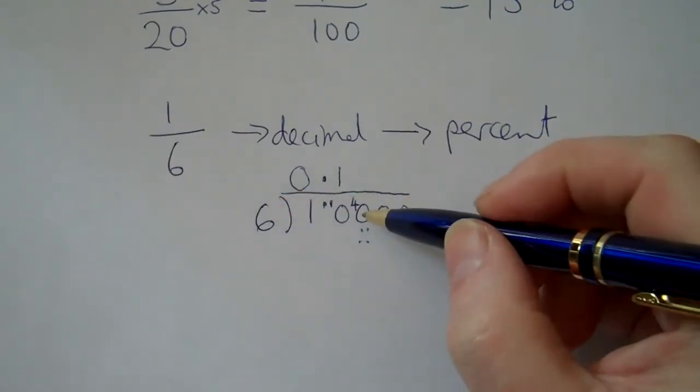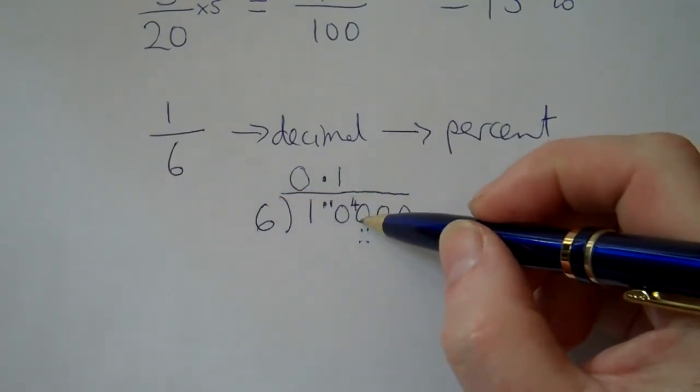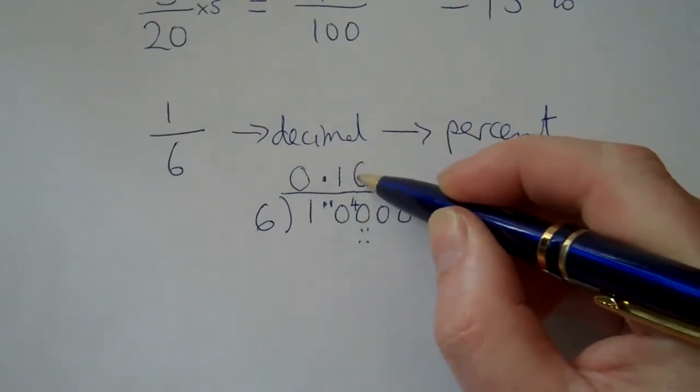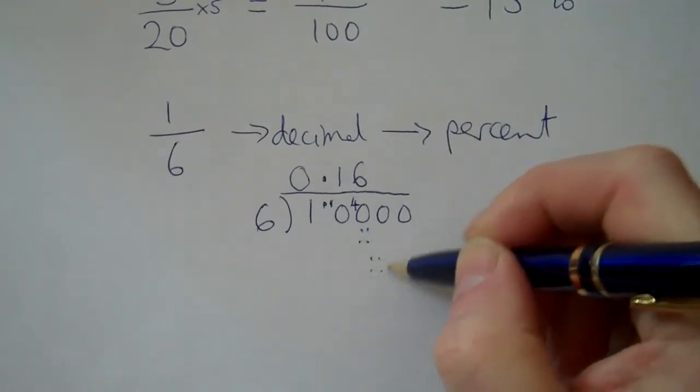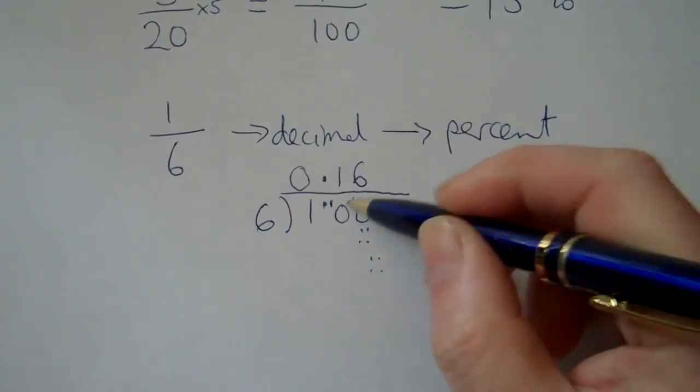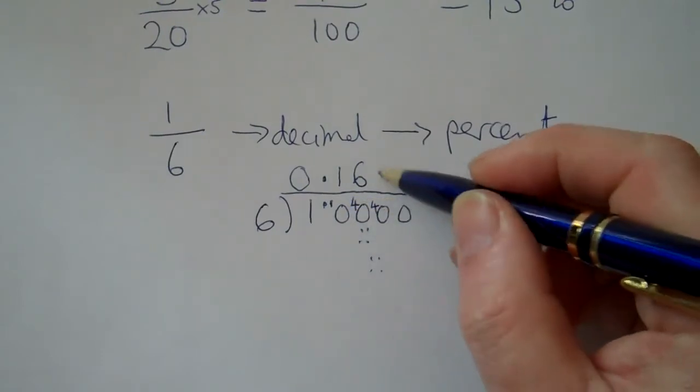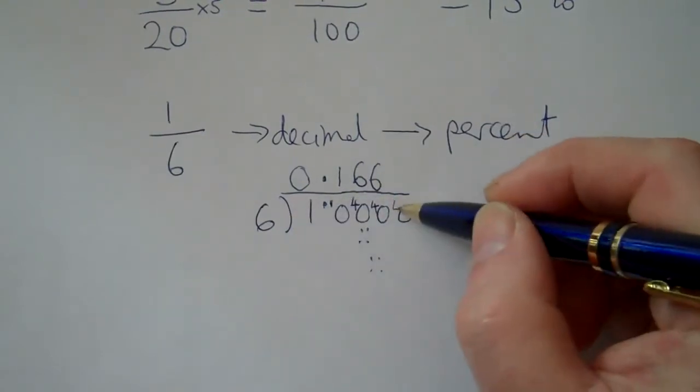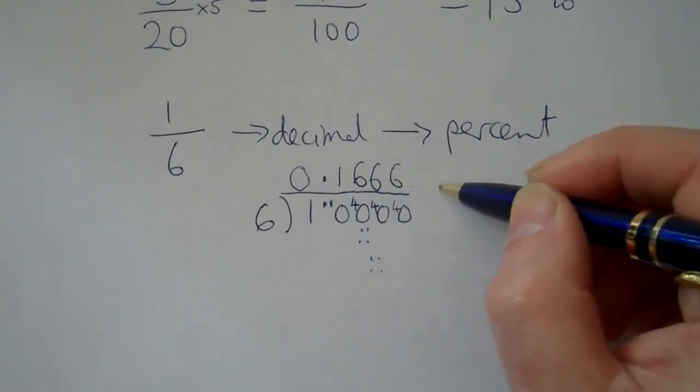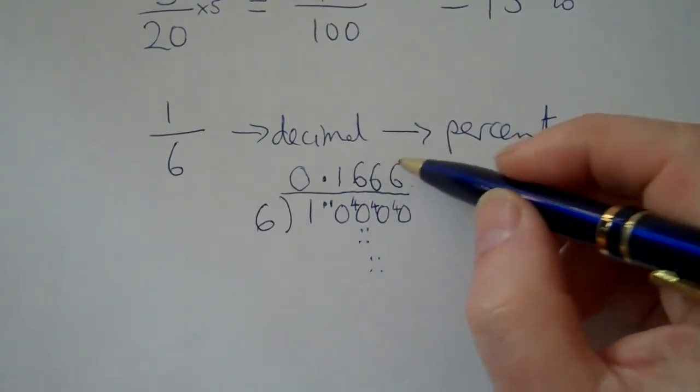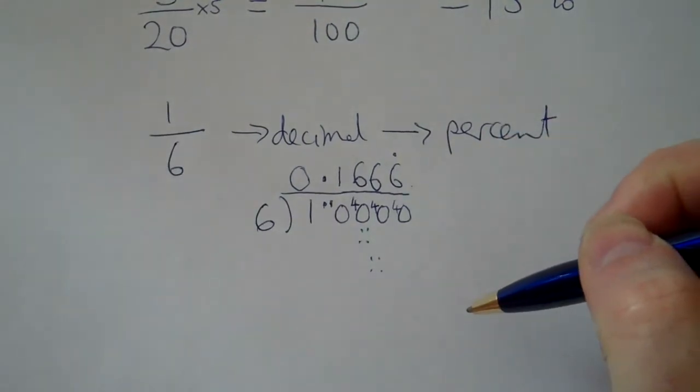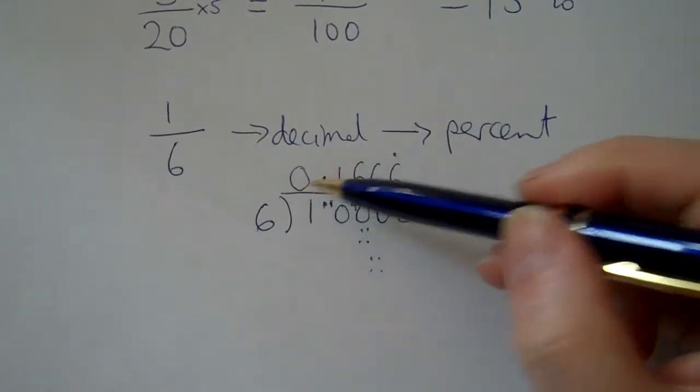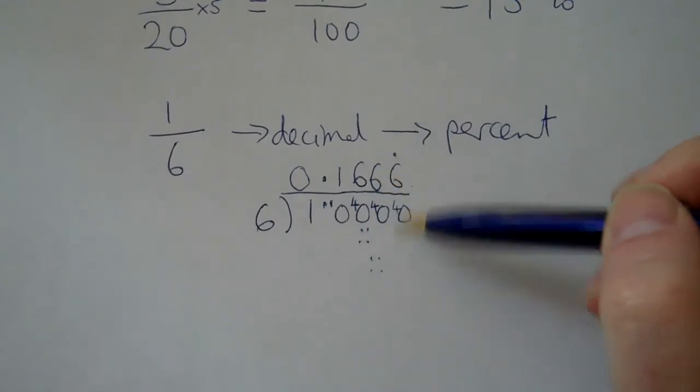How many sixes in forty? Well, six sixes are thirty-six, thirty-seven, thirty-eight, thirty-nine, forty, four left over. Hey, look, it looks like the same pattern's going to repeat. If we get four left over, we're going to have to put a six and then get another four. So it's going to be six, six, six, keeping on going. So I suppose we could put a recurring dot above that six. So that's the first stage. One sixth as a decimal is zero point one six six six six recurring.